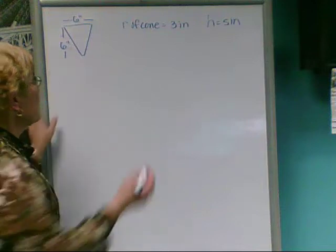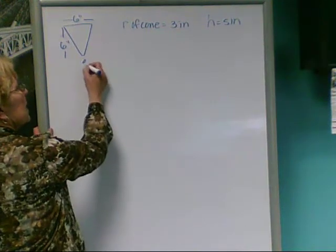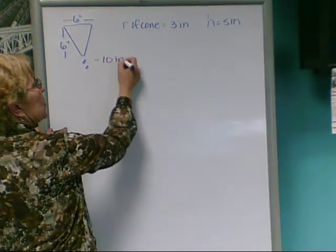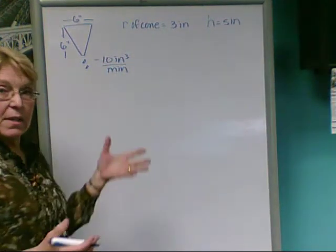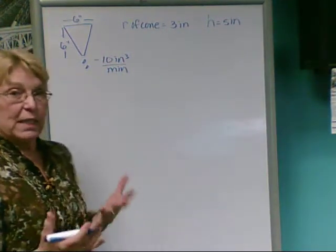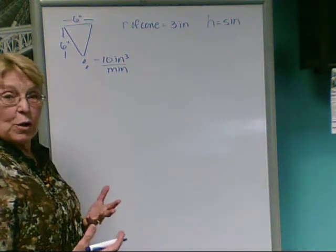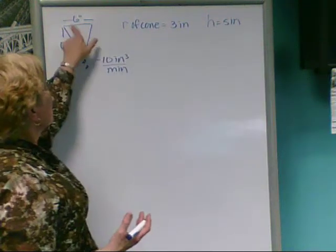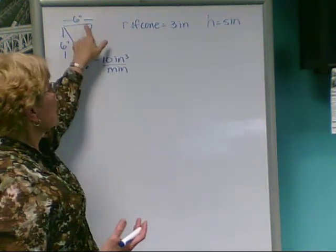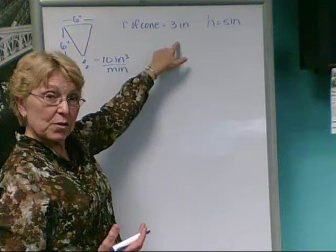We know that the empty rate for this is negative 10 inches cubed per minute, which will give us a relationship dv dt. So let's find the volume of the cone. And we know that its diameter is 6 inches, thus its radius is 3 inches.